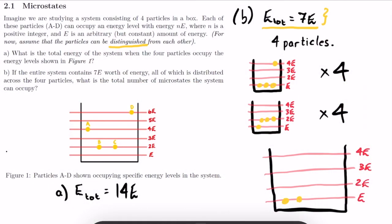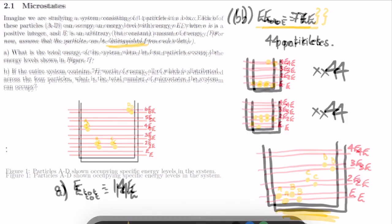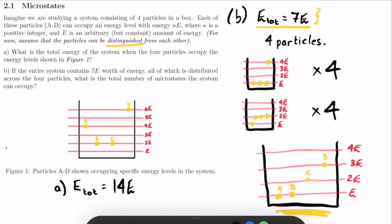Now for the big one. There's another configuration where two particles are in the lowest energy state and two are in higher energy levels. One possible combination is particles a and b in the lowest level, particle c in the 2e level, and particle d in the 3e level. That's one new microstate, and things are going to get messy quickly, so let's start a tally.